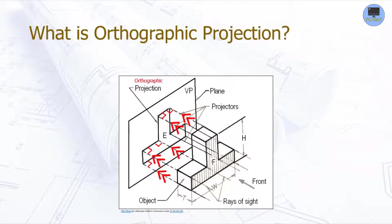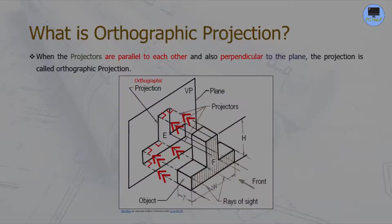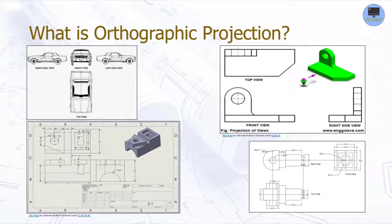What is orthographic projection? When the projectors are parallel to each other and also perpendicular to the plane, the projection is called orthographic projection. In orthographic projection, an object is represented by two or three views on mutually perpendicular projection planes. Each projection view represents two dimensions of an object. For now, two to three views is enough.